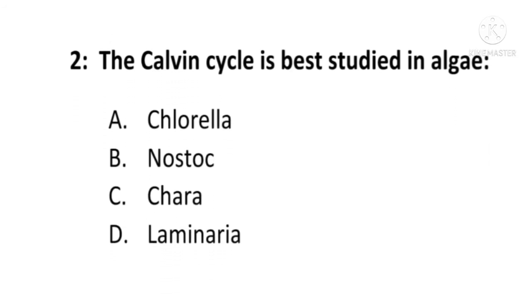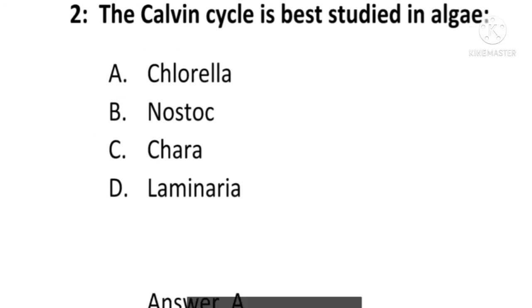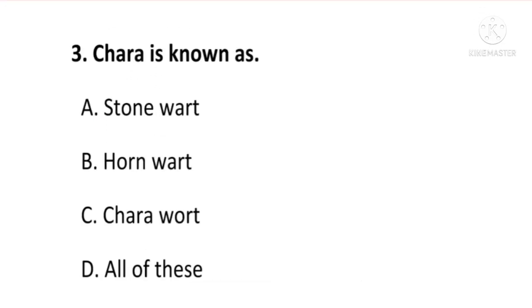Next question: the Calvin cycle is best studied in which algae — Chlorella, Gnostic, Chara, or Laminaria? The answer is A, Chlorella. The Calvin cycle is best studied in Chlorella. Next question: Chara is known as — stonewort, hornwort, charavolt, or all of these? The answer is A, stonewort. Chara is also known as stonewort.